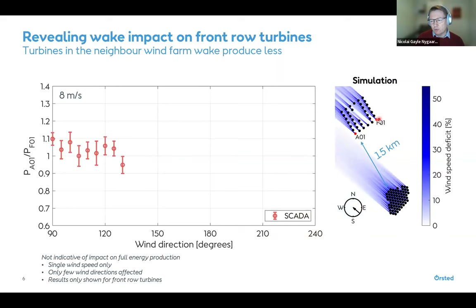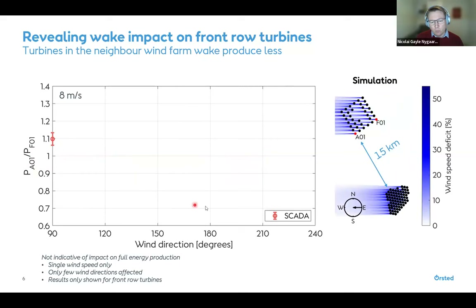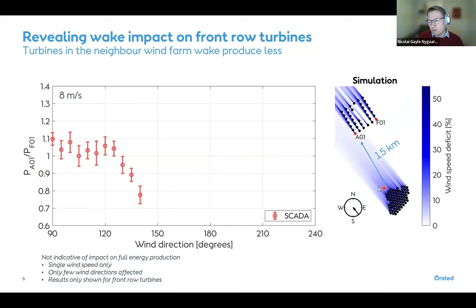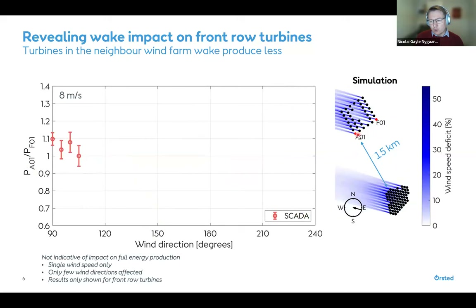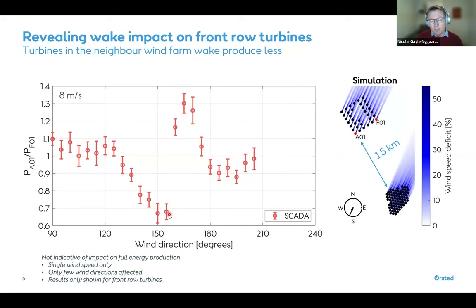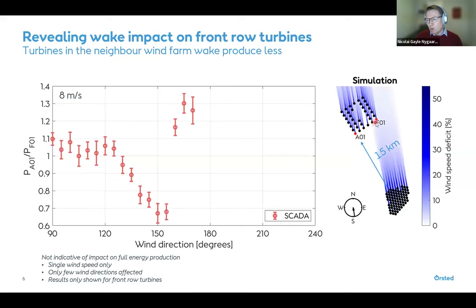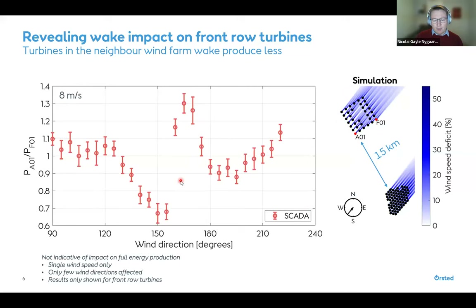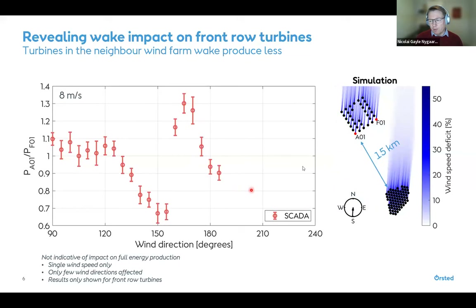We could actually see the neighbor's impact in the power production of our front row turbines. By plotting the power ratio of two corner turbines as a function of wind direction, at around 150 degrees one turbine falls in the neighbor's wake while the other is free, creating a minimum in the power ratio. At around 165 degrees the situation reverses, creating a peak — a characteristic signal of neighbor wind farm wake influence.